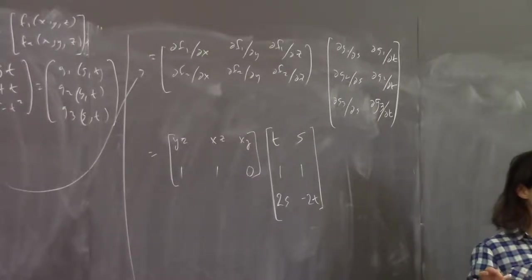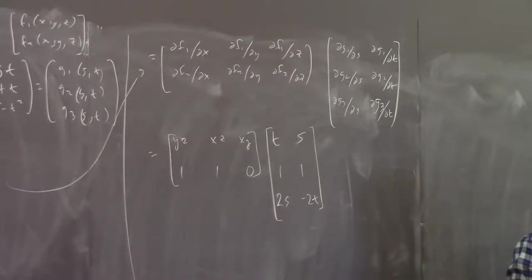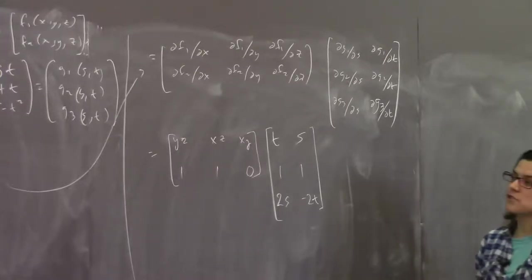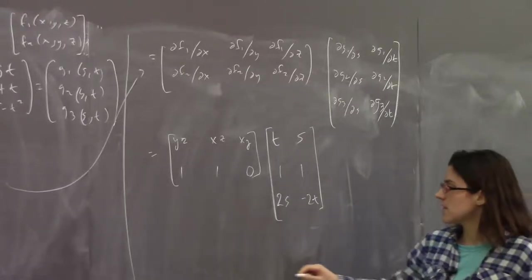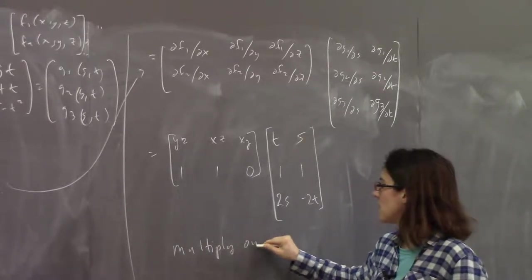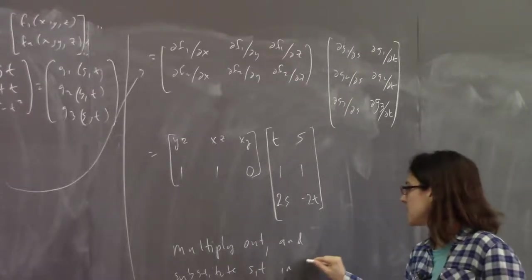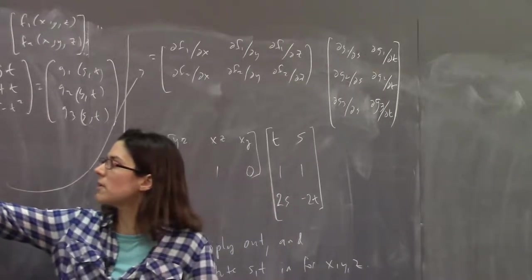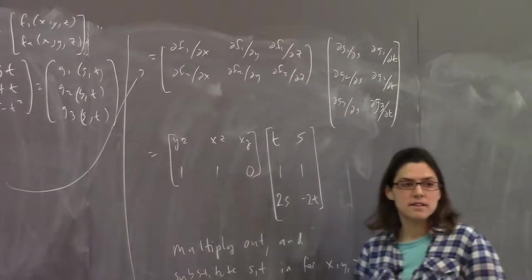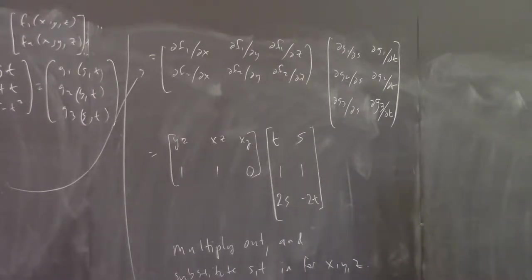These are the parts. To get the full linearization in general, you'd multiply out and substitute s and t in for x, y, z. Because f∘g is a function from ℝ² to ℝ², it only knows about s and t — not x, y, z. So you need everything in terms of s and t. You just do matrix multiplication and substitute in.